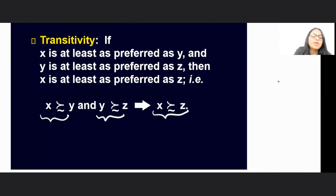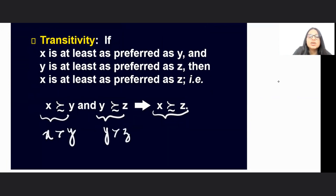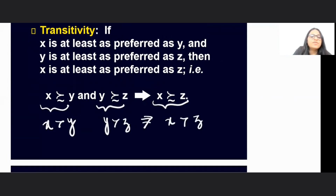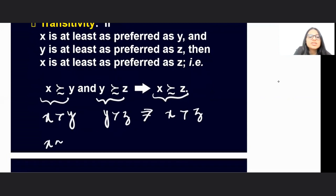...and Y is as good as Z, then X is as good as Z. If you prefer X strictly over Y, and Y strictly over Z, then you will prefer X strictly over Z. If you are indifferent between X and Y, and Y and Z, then you would be indifferent between X and Z.